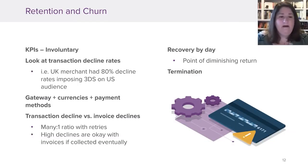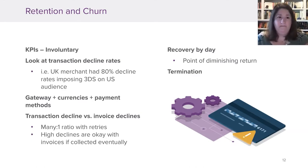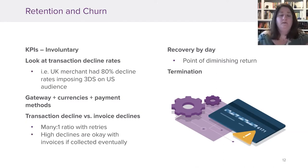Another important distinction is transaction declines versus invoice declines. Someone might report 3,000 transactions declined this month, but when asked how many invoices failed, the answer might be just two. That's because subscription billing platforms like Recurly retry transactions — so there may be more transactions, but as long as invoices are being collected, that's the goal. If the invoice decline rate is really high, that's a problem. But if invoices are eventually being paid, even with multiple transaction attempts, you're doing okay.